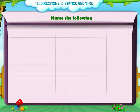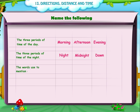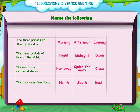Name the following. The three periods of time of the day — Morning, Afternoon, Evening. The three periods of time of the night — Night, Midnight, Dawn. The words used to mention distance — far away, quite far away, close. The four main directions — North, South, East, West.